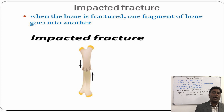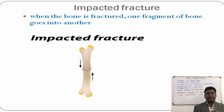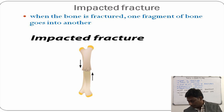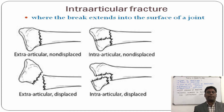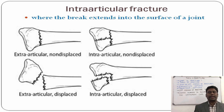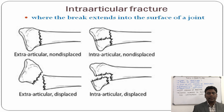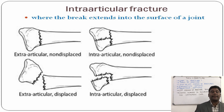Impacted fracture is where one fragment of the bone moves into the other. Intraarticular fracture occurs when the fracture extends from the surface of the bone to the joint, whereas the opposite is called an extraarticular fracture. These may be further subdivided into displaced or non-displaced.